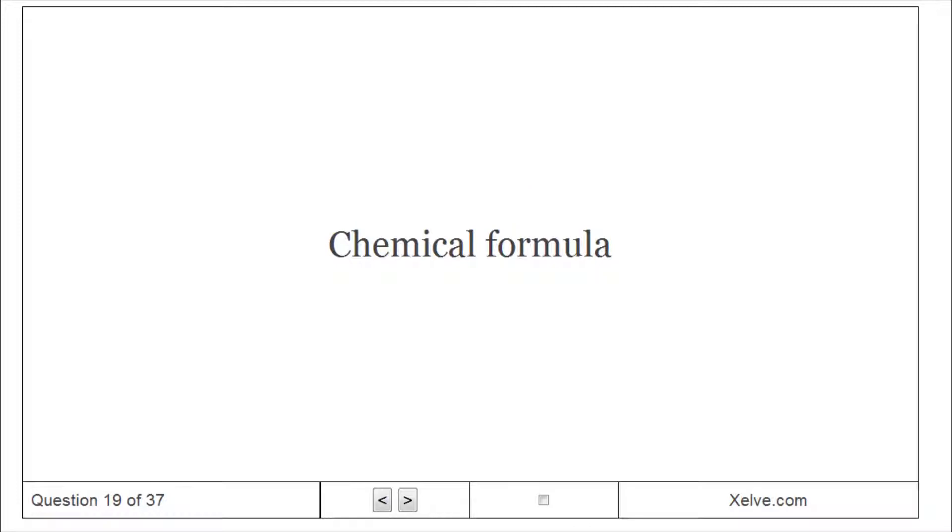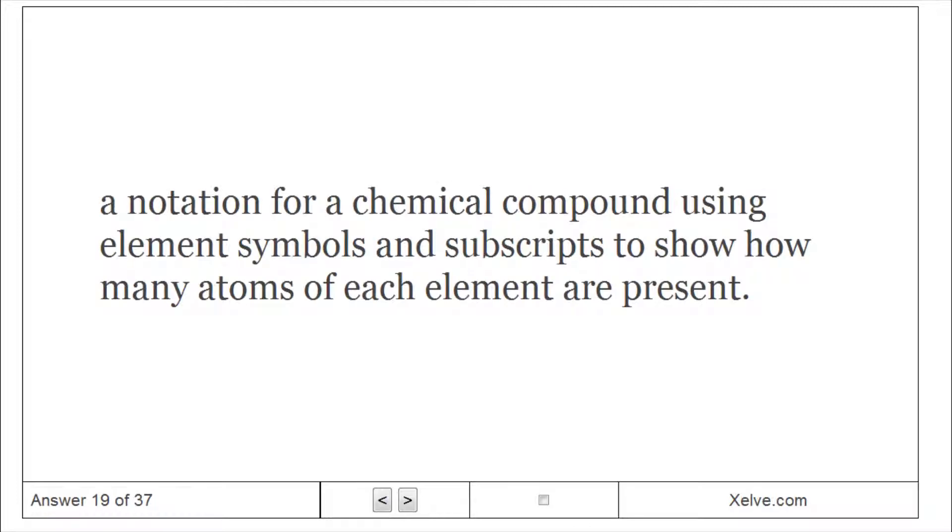Chemical Formula: A notation for a chemical compound using element symbols and subscripts to show how many atoms of each element are present.